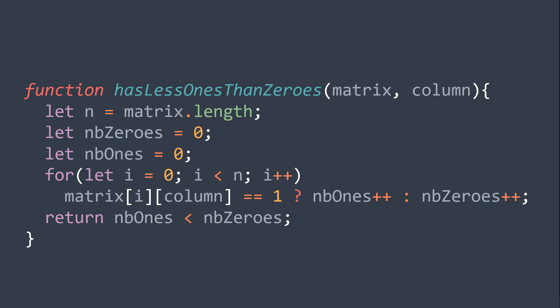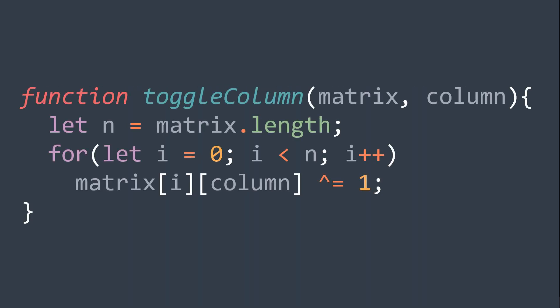Third additional function, the one to toggle a column, it takes the matrix and the index of the column as parameters, then for each index i in the column, matrix of i column becomes equal to matrix of i column XOR 1.